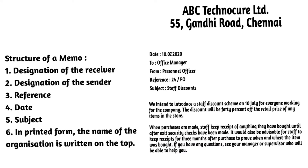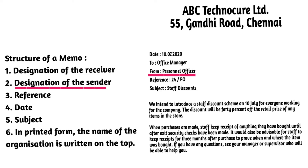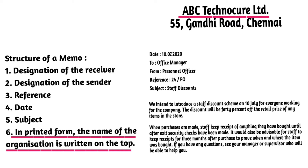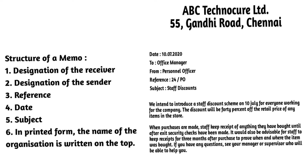Now let me tell you about the structure of a memo. Number one, designation of the receiver; number two, designation of the sender; number three, reference; number four, date; number five, subject; number six, in printed form, the name of the organization is written on the top. Now let me give you one example of a memo — look at this example.